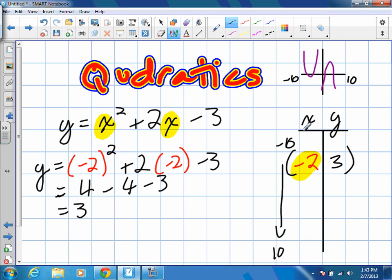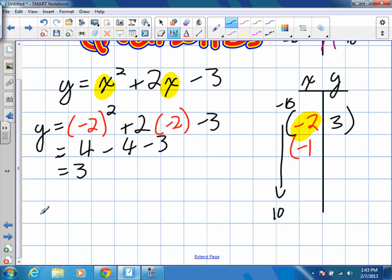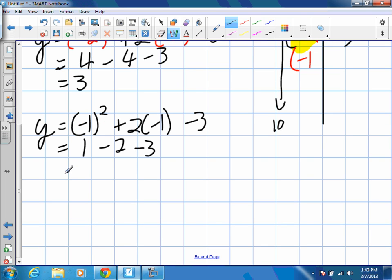So, from there, I'm going to try the next value at negative 1. y is equal to negative 1 squared plus 2 times negative 1 minus 3. Negative 1 squared will give us positive 1. 2 times negative 1 will give us negative 2 minus 3. What's that going to give us? Not quite. 1 minus 2 is negative 1. Negative 1 minus 3 is negative 4.